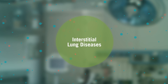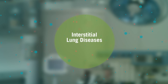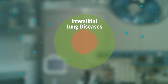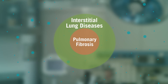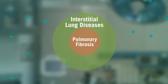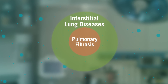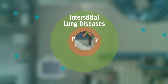There are over 100 different kinds of interstitial lung diseases. We group these diseases together because they share two common features: inflammation and scar tissue. Both of these occur in the walls of the tiny air sacs of the lungs.